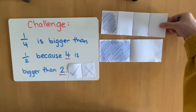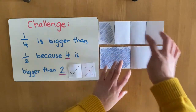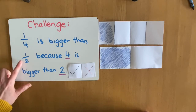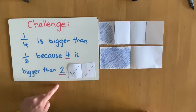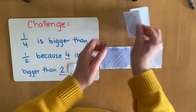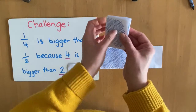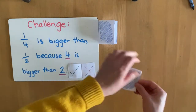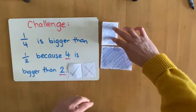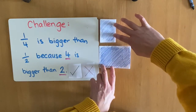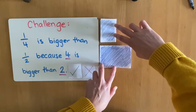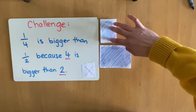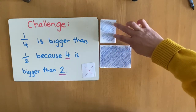So this represents one-quarter and this represents one-half. Let's look at the statement again: one-quarter is bigger than one-half because four is bigger than two. Look at one-quarter — just the colored piece. That's not true. Look at how much smaller one-quarter is. A quarter is actually smaller than a half. So this statement is false. One-quarter is smaller than one-half.